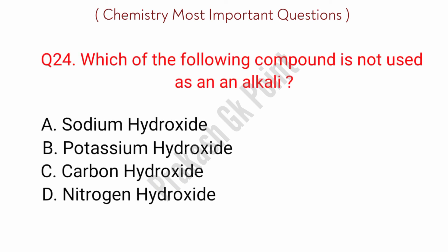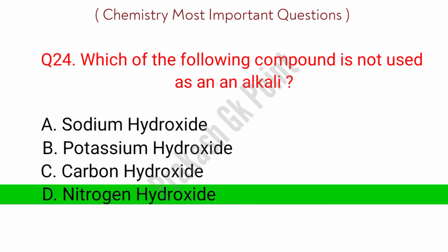Next question: which of the following compounds is not used as an alkali? Answer: option D, Nitrogen hydroxide.